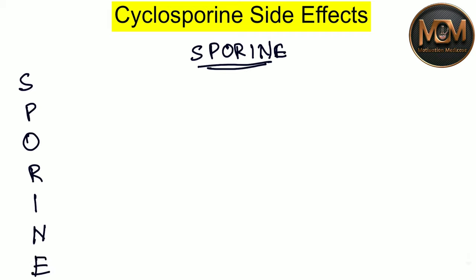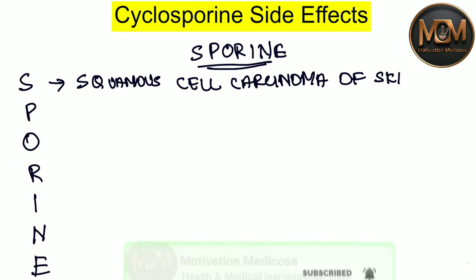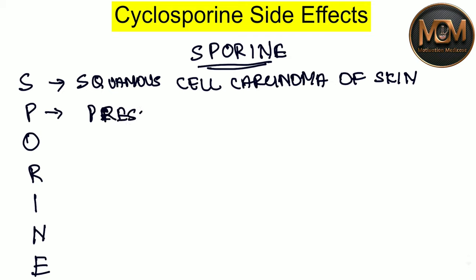From the S, we have squamous cell carcinoma of skin — that is the first side effect. From the P, we have pressure, that is hypertension. I'm writing it as HTN.